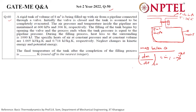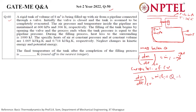Now coming to the energy balance of the control volume. The rate of change of internal energy of the control volume equals the energy carried in by the incoming mass via enthalpy, plus any heat added Q, minus work done W by the system. The exit enthalpy and work terms are both zero here, since no mass exits and no work is done by the system.